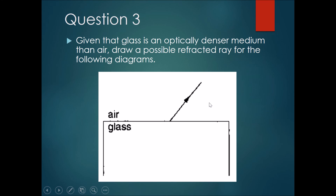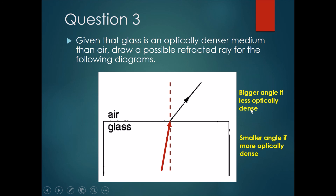Now draw a different one: given that glass is an optically denser medium, draw a possible refracted ray where light is coming out of glass into air. Draw the normal first, then draw the line. The angle in glass is smaller and the angle in air is bigger. The law still remains — if it's less optically dense like air, you get a bigger angle no matter where the light ray comes from, and a smaller angle if it's more optically dense like glass.